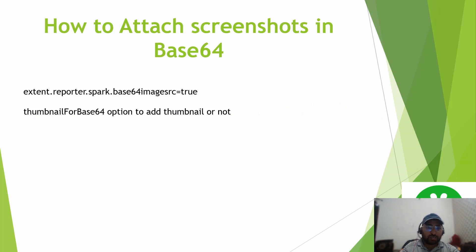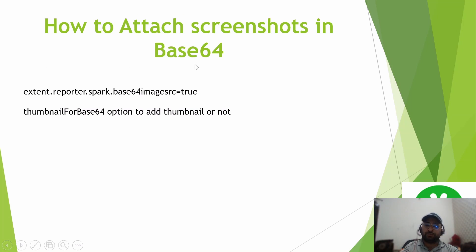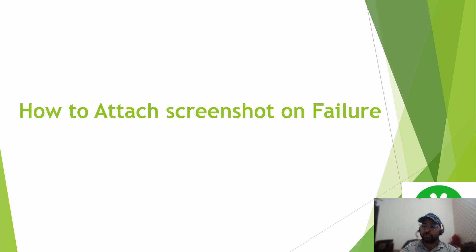Let's quickly recap what we covered: attaching screenshots in byte form using screenshot.dir and screenshot.rel.path parameters with scenario.attach; avoiding local storage by converting screenshots to base64 using the base64ImageSrc parameter; providing a generic thumbnail for base64 screenshots in extent-config.xml; and attaching screenshots only on failure using scenario.isFailed(). That's what I wanted to cover. Please like, share, and subscribe. Thank you.